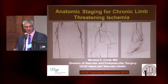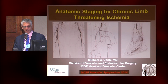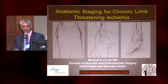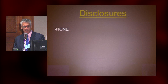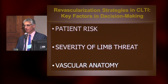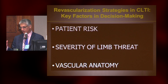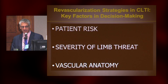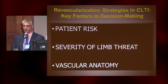What I'm going to try to do quickly in the next 10 or 15 minutes is talk about how we stage the vascular anatomy in patients with chronic limb-threatening ischemia, and why we need a new approach. What we're trying to formulate in a more cohesive fashion is how we make decisions around these patients, and there are really three axes around which we do this.